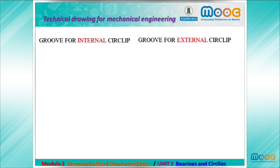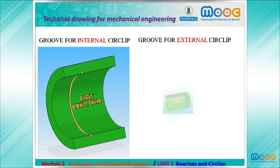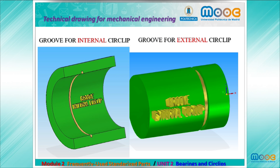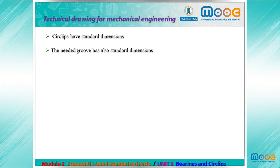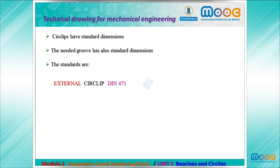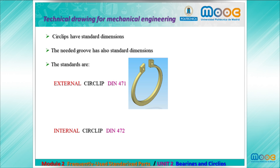Here we have both grooves — for the internal circlip and for the external circlip. Circlips have standard dimensions, and the needed groove also has standard dimensions. For the external circlip the standard is DIN 471, and for the internal circlip it is DIN 472.